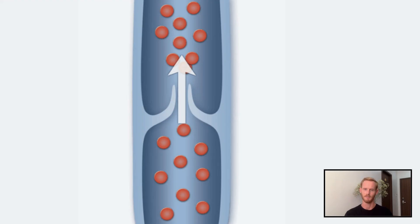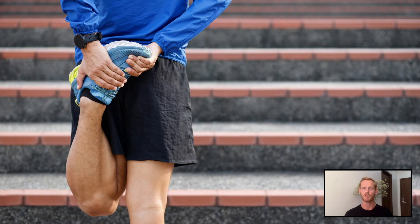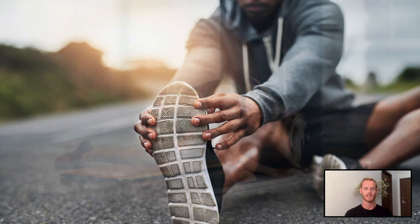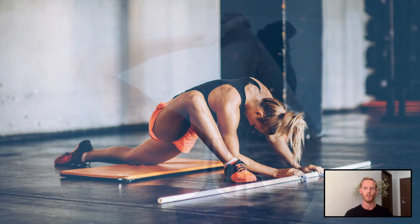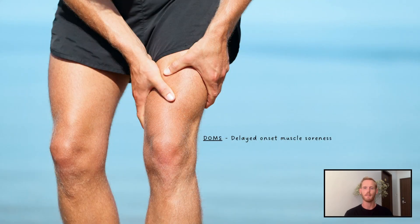The second phase of the cool-down involves stretching the muscles. Static stretches, like a hamstring stretch, are typically used. This serves to lengthen the muscle fibres, reducing stiffness later on, and helps to maintain blood flow, which speeds up the removal of lactic acid and limits the effects of DOMS. DOMS stands for Delayed Onset Muscle Soreness, and tends to peak somewhere between 24 and 48 hours after exercise.